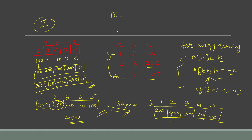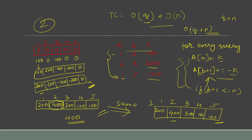The time complexity: for step 1 (adding k at index a and -k at index b+1), it takes O(q) time since each add operation is O(1). For step 2 (computing prefix sums), we traverse the array once, taking O(n) time. So the total time complexity is O(q + n) — linear — compared to the brute force O(q × n) quadratic time.